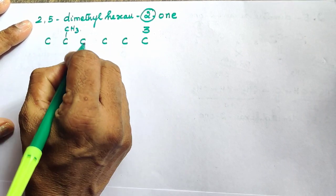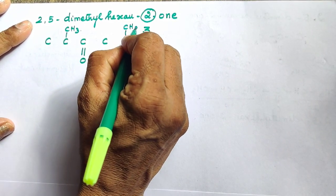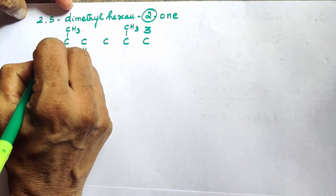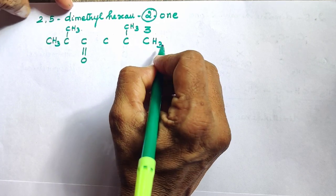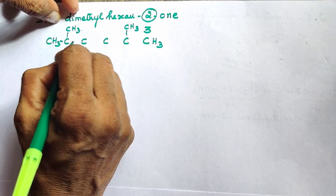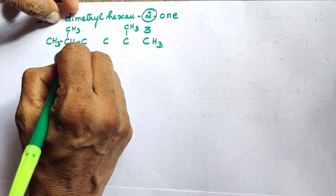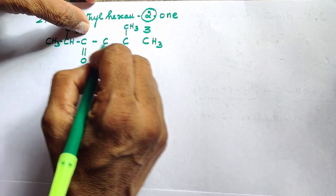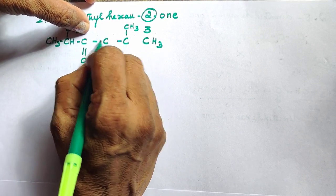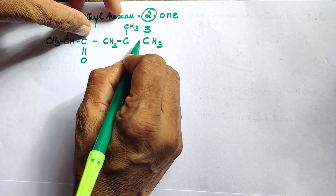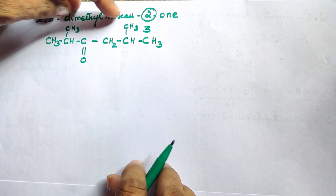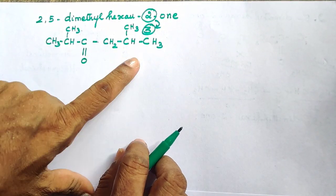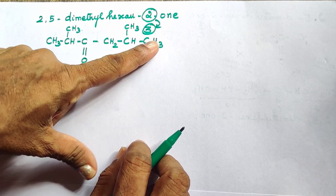For 2,5-dimethylhexan-2-one, the remaining carbon atoms connect. The terminal carbon atoms always have hydrogen. For 1,2,3 bonds there is 1 hydrogen, here there are 4 bonds so there is a substituent. Here are 2 bonds so 2 hydrogen. Here are 3 bonds so 1 hydrogen, giving CH3. This is the structure of 2,5-dimethylhexan-3-one.